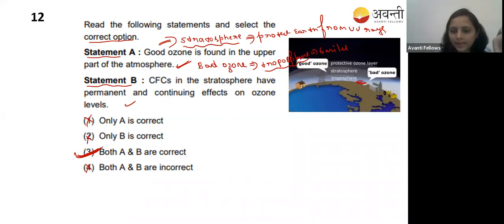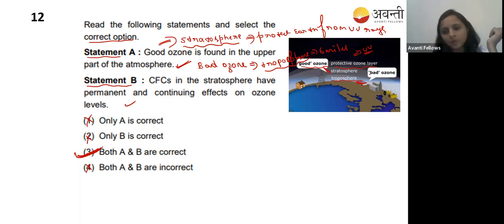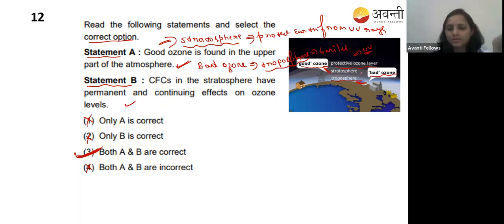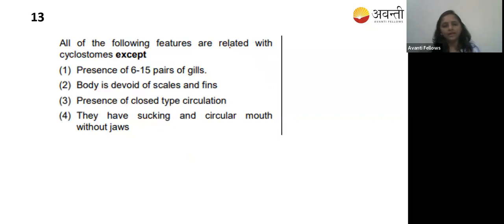In the stratosphere you can see good ozone, protecting earth from UV rays. In the troposphere you can see bad ozone - the pollution coming from the earth - which we call the troposphere's bad ozone.